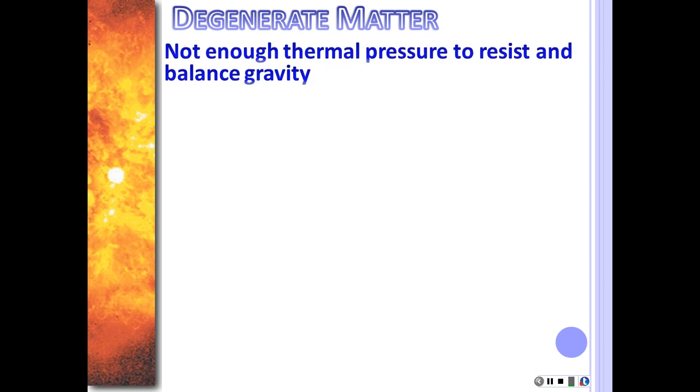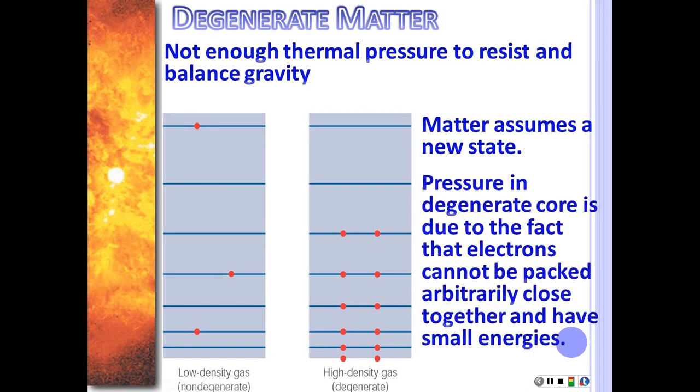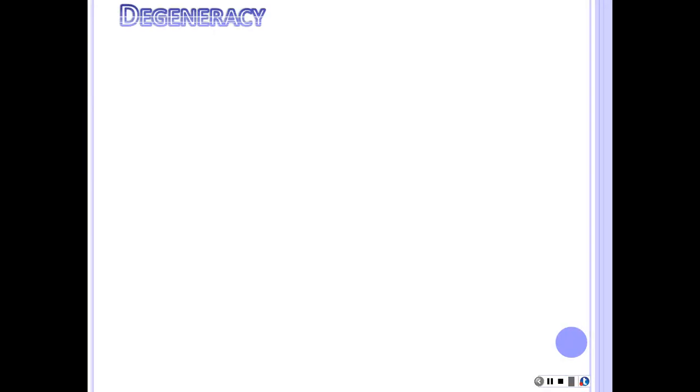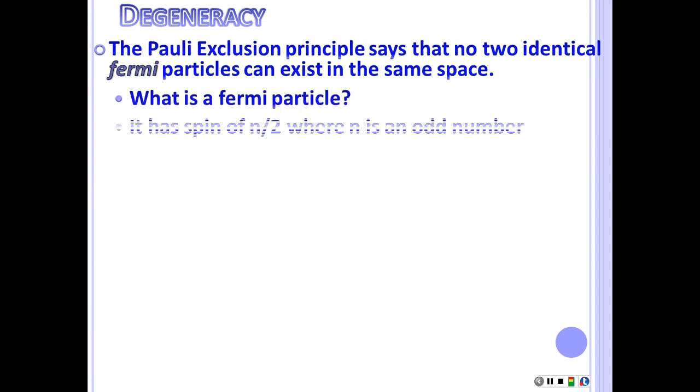Okay, so let's talk about degenerate matter. So remember, we've got no thermal pressure because we're not making anything. And so it actually becomes this new state of matter, which is where the electrons are as close together as they can possibly get. And why is this? Well, it has to do with the Pauli exclusion principle. And because there is this thing called the Pauli exclusion principle, it means that you cannot arbitrarily put electrons together. They can only be a certain distance apart. So what it actually says is that no two identical Fermi particles can exist in the same space. That's what the Pauli exclusion principle says. What is a Fermi particle? Well, it's any particle that has a spin of n over 2, where n is an odd number. So electrons, protons, neutrons are all fermions.